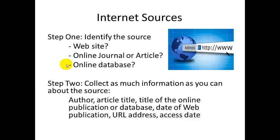Then simply collect as much information as you can about the source. Just like with books or magazine articles, hopefully you'll be able to find an author if it's an authored piece. You want to find the title of the specific piece of writing you are looking at. If it's from an online publication or database, make sure you know the title of that publication or database. If you can find a date when the article was originally posted to the web, that's helpful. You will always be able to find the URL address, and even though it's not always required, you want to write it down or keep a copy in your notes.